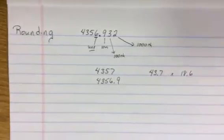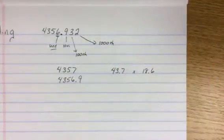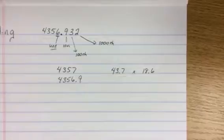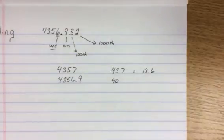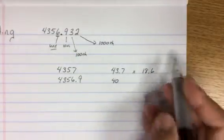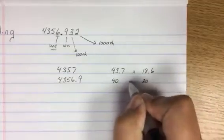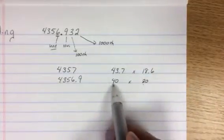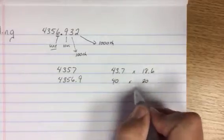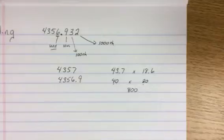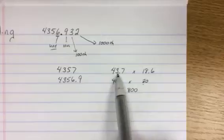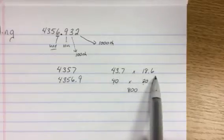43.7 times 18.6. Well, I can give you the approximate answer quickly by rounding 43.7 to 40, because three is less than five. And 18.6 is almost 20. 40 times 20 is the same as saying 4 times 2, which is 8, with the two zeros. So 40 times 20 would be 800, which gives you an approximation of 43.7 times 18.6.